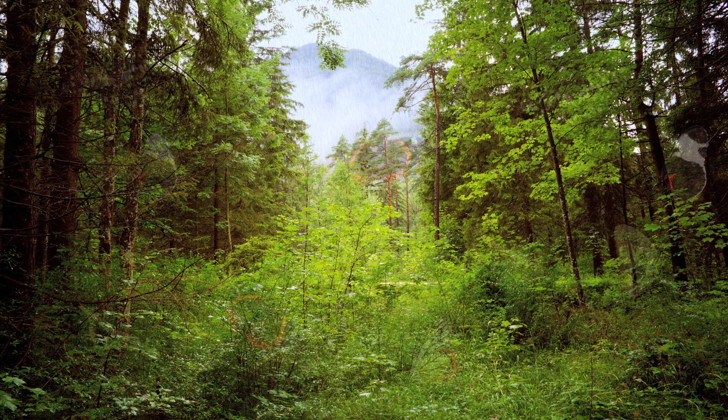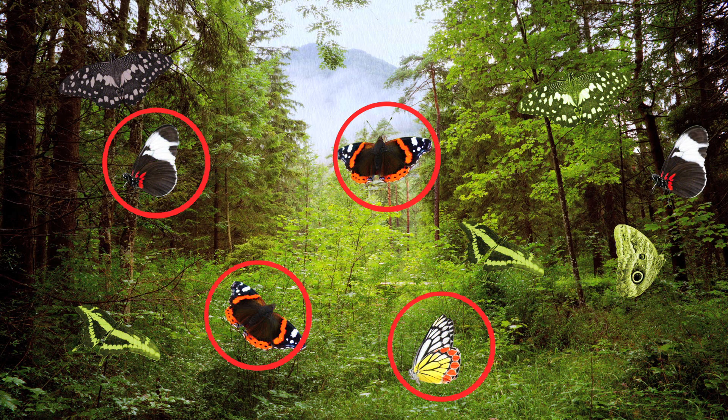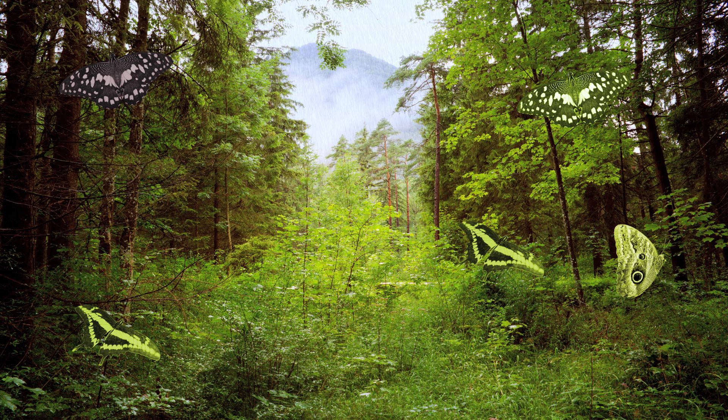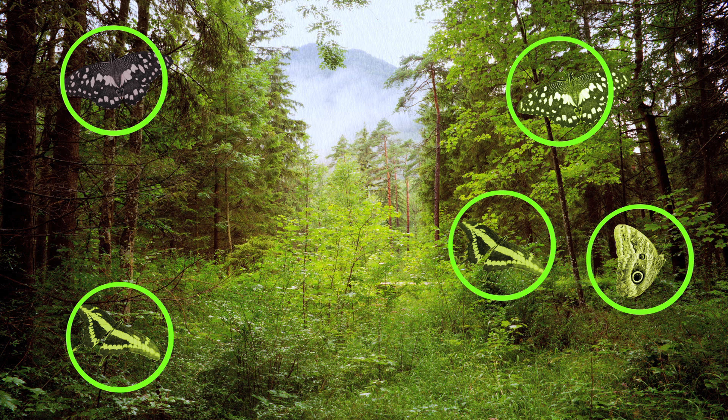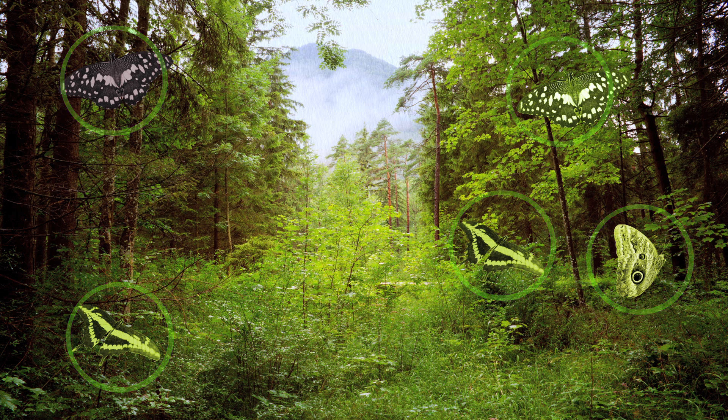Remember during the lab when you had 5 seconds to find as many butterflies as you could? The ones that you found represented the butterflies that were eaten and did not have a chance to reproduce. The ones that you couldn't find, however, represented butterflies that would have survived and would be able to pass their traits on to the next generation.